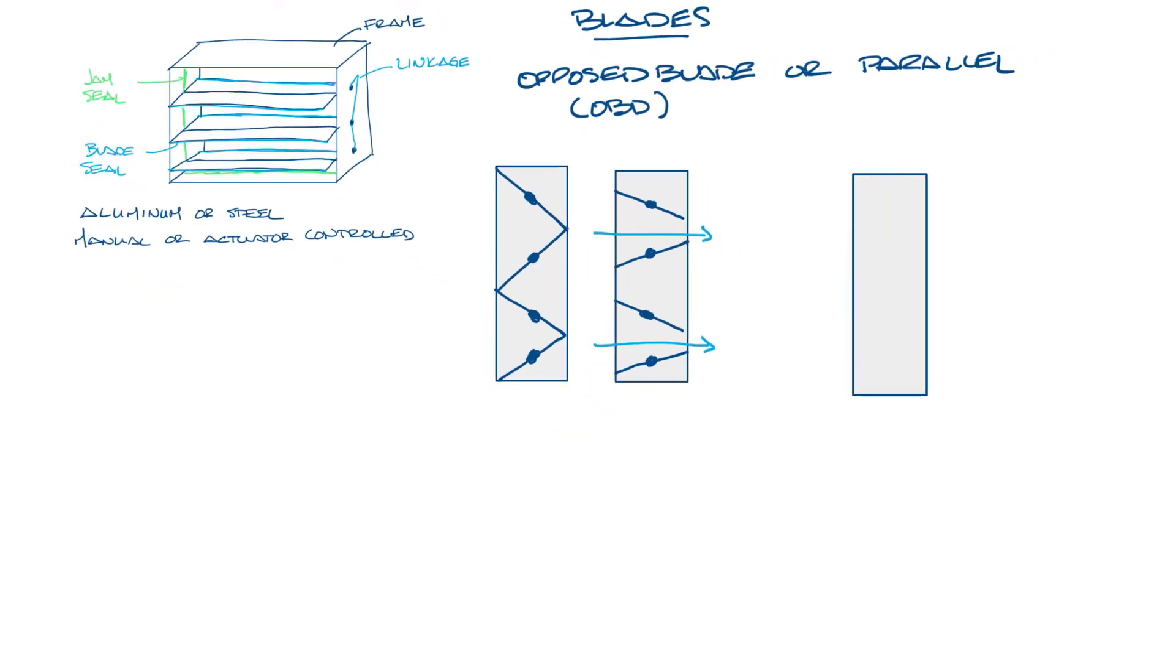Parallel blades work in parallel like this. You can see that as the damper closes the airflow will be directed towards the direction of the damper blades. Parallel blades typically require more torque to open but less to close compared to OBDs. The relationship between flow rate and position of the blades is not linear, meaning that 25% open may not be 25% flow or that opening another 5% will give you 5% more flow.